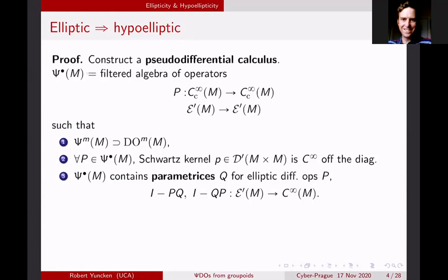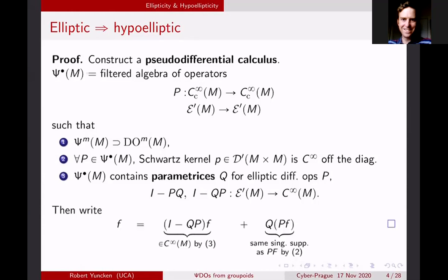Once you have those conditions, you simply write your function F — which is a solution to the differential equation — as the sum of (I − QP)F and QPF. The first part will be smoothed by the fact that it's a parametrix. The second part will have the same singular support as the right-hand side PQF, and that shows that F is smoothed on the same subset of M as PF. So we're done. This explains why a pseudo-differential calculus is a useful thing to have.